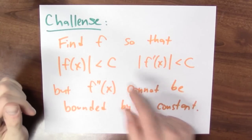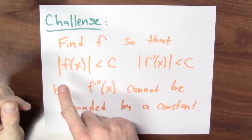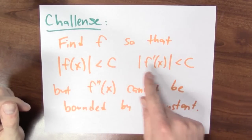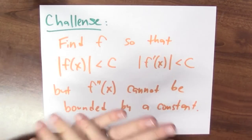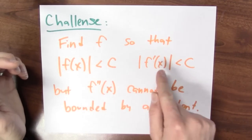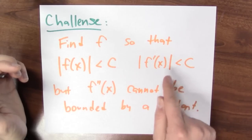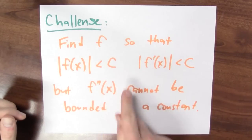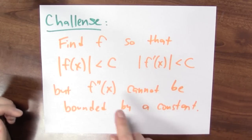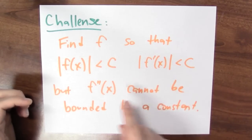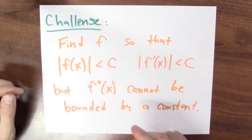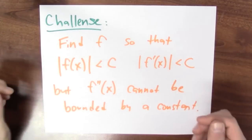If you think this is an interesting example, it's worth trying to cook up an even more elaborate one. Here's a challenge: can you find a function f such that the function's values in magnitude are less than some constant c and the function's derivative in magnitude is also less than c — so for any value of x, both the function's value and its first derivative are less than c in magnitude — but the second derivative cannot be bounded by any constant? Can you cook up a function so that the values and first derivative are bounded by c, but the second derivative can be as large or as negative as you'd like by choosing x appropriately?